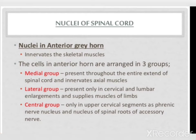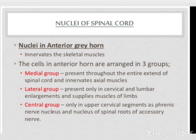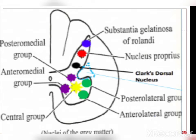Regarding nuclei in the anterior grey horn: they innervate the skeletal muscles and are arranged in three groups — medial, lateral and central. The medial group is present throughout the entire spinal cord and innervates the axial muscles (muscles of face, neck and thorax). The lateral group is only present in the cervical and lumbar regions to supply the muscles of the upper and lower limbs. The central group is only present in the upper cervical segment as the phrenic nerve nucleus and the nucleus of the spinal root of the accessory nerve (11th cranial nerve).